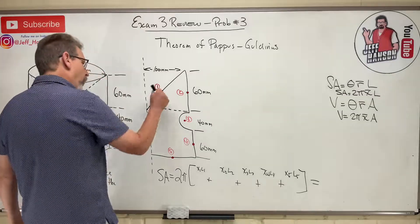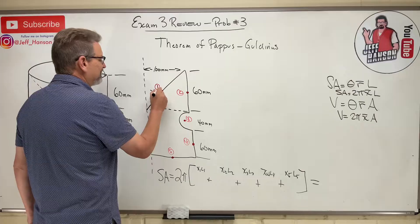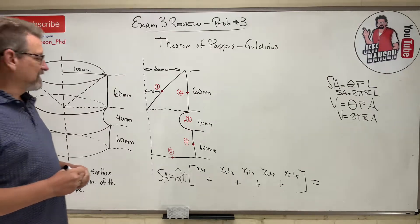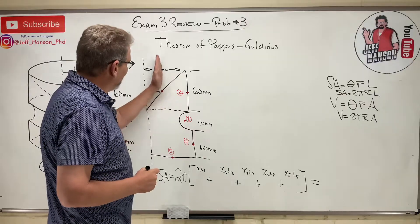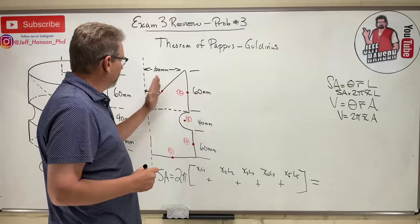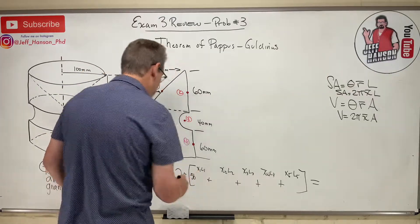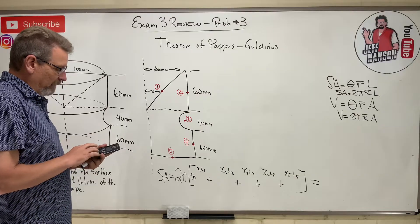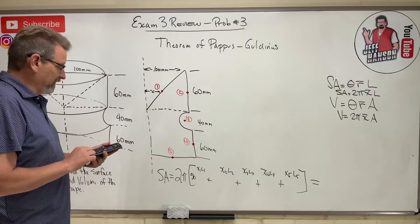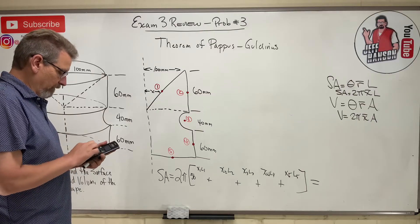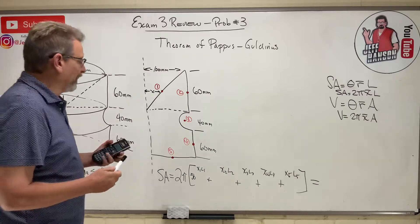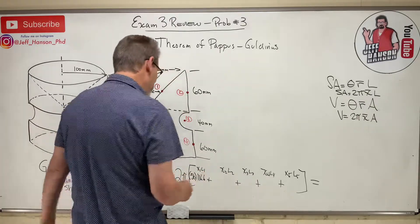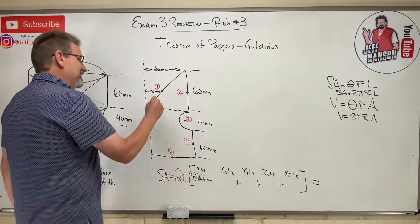What is x-bar for piece number one? That's the distance from the axis to the centroid of that line segment. The dot is in the middle of that line — from 0 to 100, so x-bar₁ = 50. The length of that line requires the Pythagorean theorem: √(100² + 60²) = 116.6. So piece one contributes 50 × 116.6.